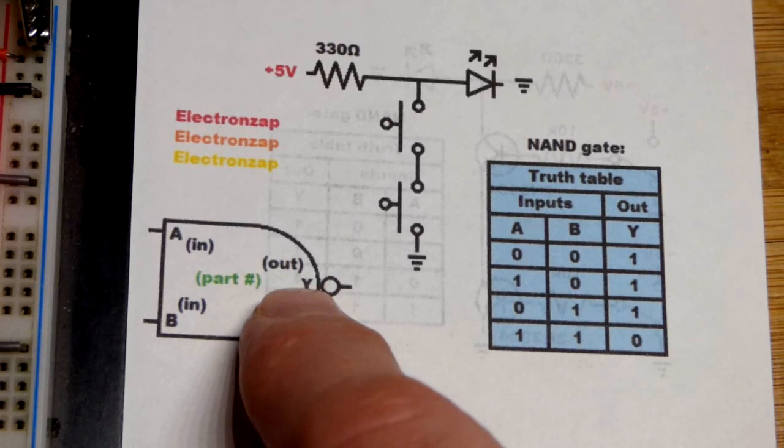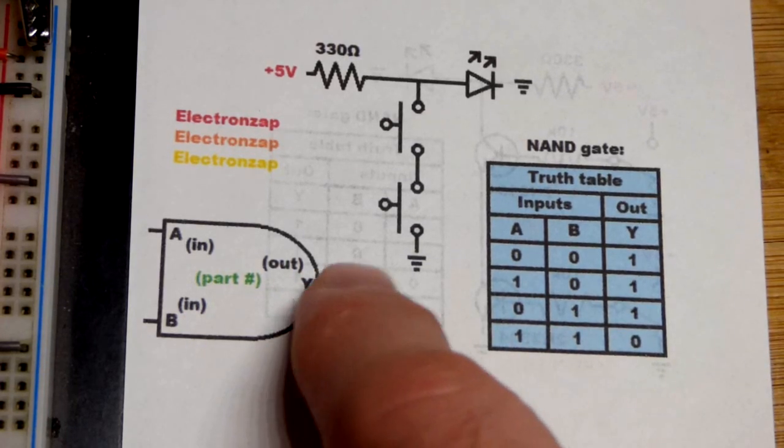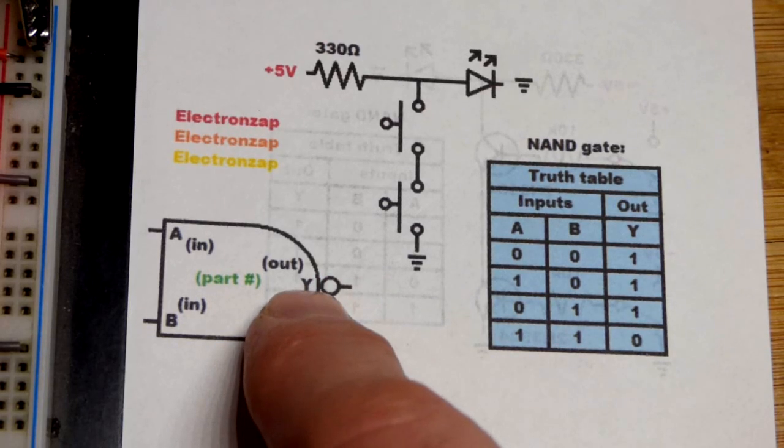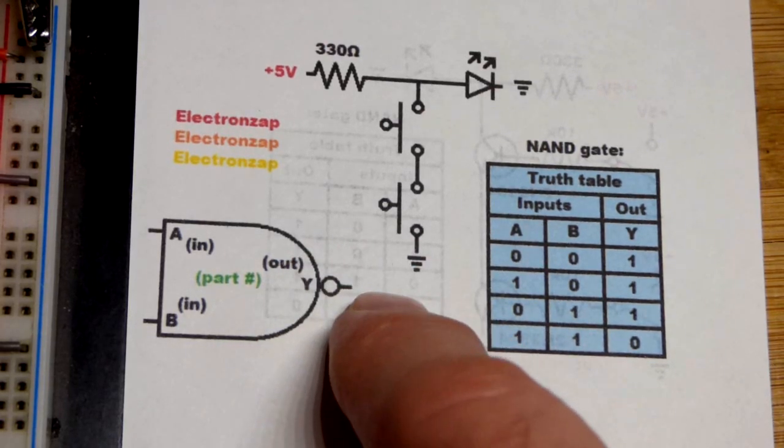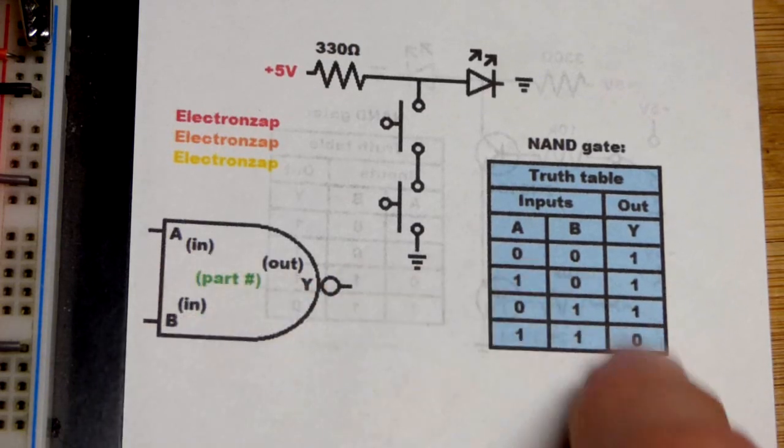But in any case, if the output's high, I'm talking about the AND gate now, not the NAND gate. We have this inversion bubble. So a high output for the AND gate is a low output for the NAND gate. Otherwise it's high.